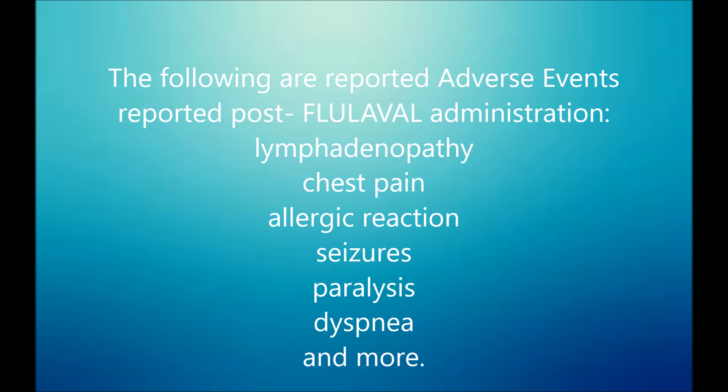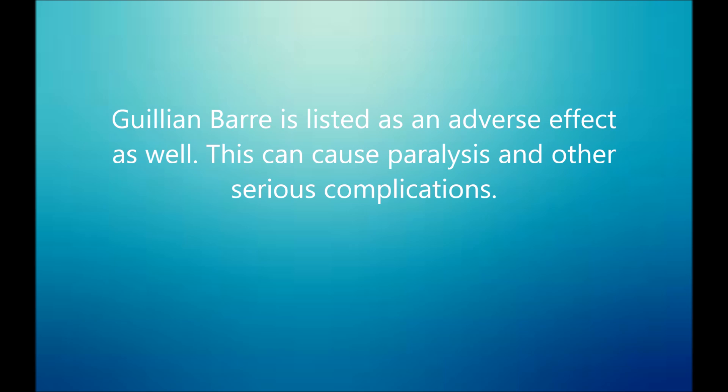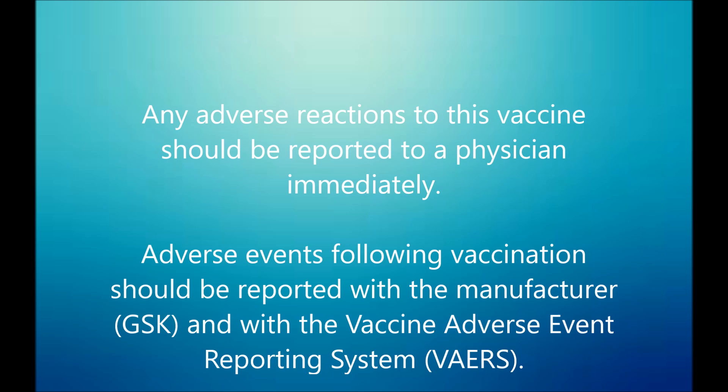The following are some reported adverse events listed on the vaccine insert post flu label administration: lymphadenopathy, chest pain, allergic reaction, seizures, paralysis, dyspnea, and more. Guillain-Barré syndrome is also listed as an adverse effect, which can cause paralysis and other serious complications. Any adverse reactions to this vaccine should be reported to a physician immediately. Adverse events following vaccination should also be reported to the manufacturer and to the Vaccine Adverse Event Reporting System.